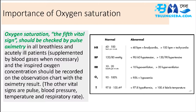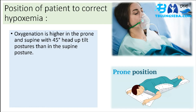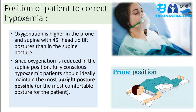Position of patient to correct hypoxemia: air oxygenation is higher in the prone and supine with 45-degree head-up tilt postures than in the supine posture. Since oxygenation is reduced in the supine position, fully conscious hypoxemic patients should ideally maintain the most upright posture possible.